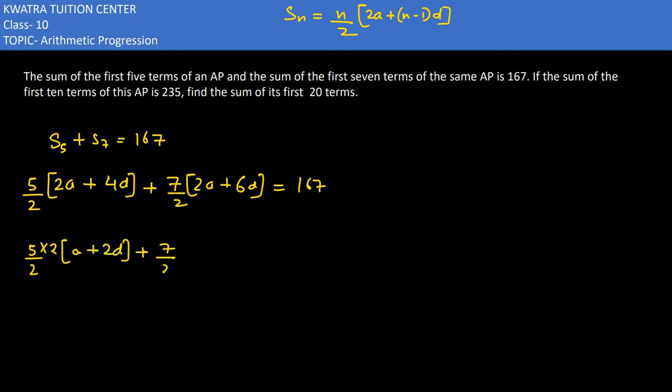And 7 by 2, we have 2 common here, a plus 3d in bracket. Right side we have 167.